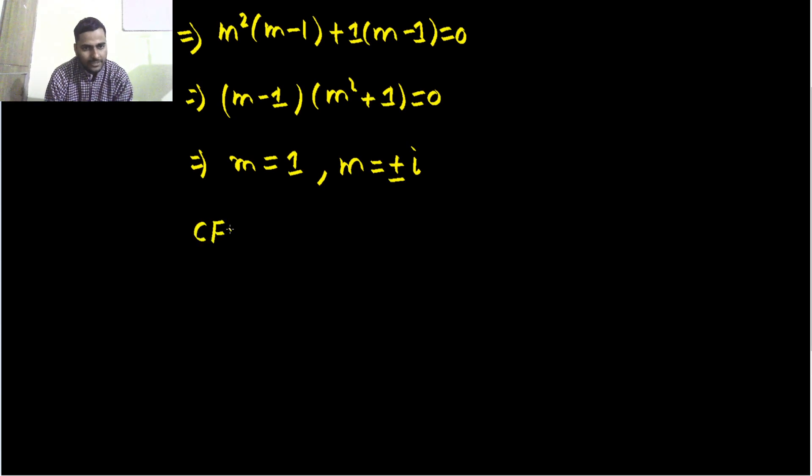So complementary function for that will be c₁e^(m₁x) so e^x and for the other two this is nothing but 0 + i and 0 - i. If you compare this to a ± ib, a will be 0 and b will be 1. Now for them we will write e^(0x), c₁ I have already used so c₂ sine bx, b here is 1, plus c₃ cos comes here.